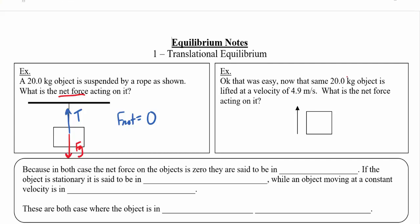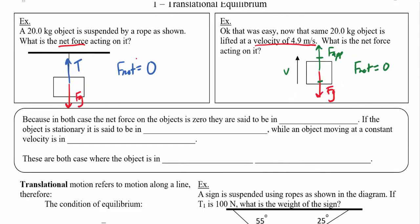Imagine we've got another object — this 20 kilogram object is now being lifted up at a velocity of 4.9 meters per second. There's the same force of gravity pulling downwards, and note that even though there's a velocity upwards, the velocity is constant and so it's not accelerating. Whatever applied force is lifting it upwards would still be equal to gravity, so again the net force is going to equal zero. In both of these cases the net forces are zero, so they're in a form of what we call equilibrium.